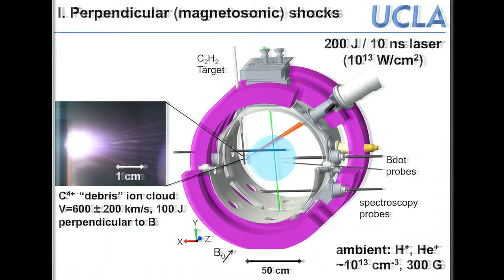Just a couple of nanoseconds after the laser strikes, the plasma ablates to the right at high speed. At laser intensities around 10^13 W/cm², the bulk debris is carbon-plus-four — these are the laser plasma ions that explode into the ambient at 600 km/s with a large velocity spread. The coupling from the laser to the debris ion kinetic energy is very efficient — we can get 50% into debris ions.